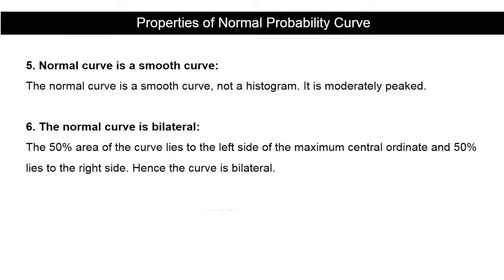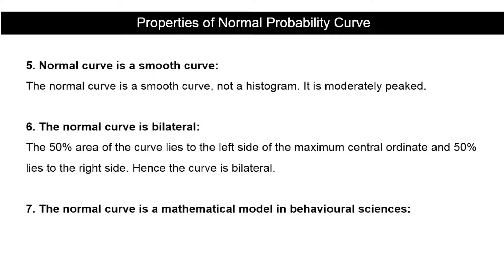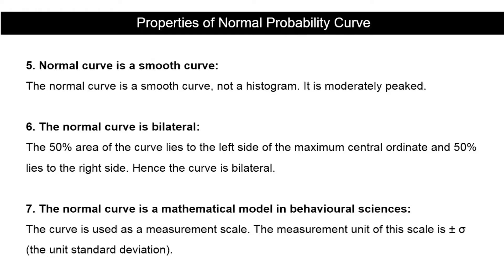The sixth property is that the normal curve is bilateral: 50% of the area lies to the left side of the maximum central ordinate and 50% lies to the right side. The seventh property is that the normal curve is a mathematical model in behavioral sciences — the curve is used as a measurement scale, and the unit of measurement is plus or minus sigma (the standard deviation unit).